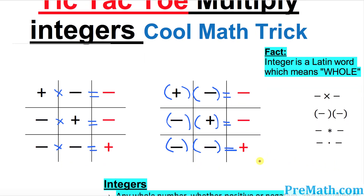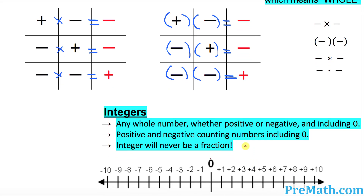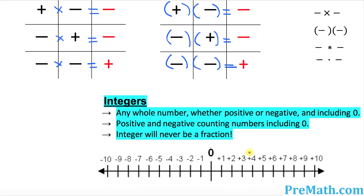Let's move on to integers and how we define them. Integers are nothing more than whole numbers with negative and positive signs, including zero. On the number line, all the counting numbers on the right-hand side are positive integers, and on the left-hand side of zero they are negative. As you go right, numbers increase; as you go left, numbers decrease.